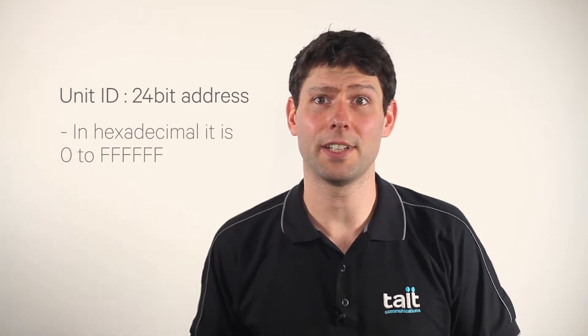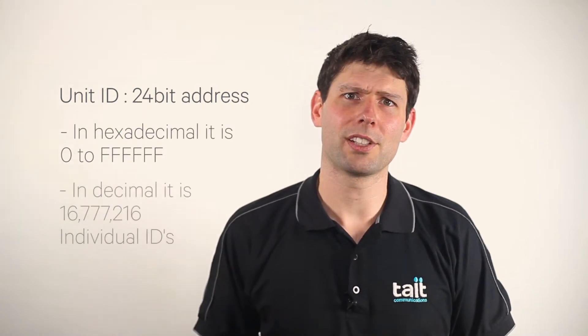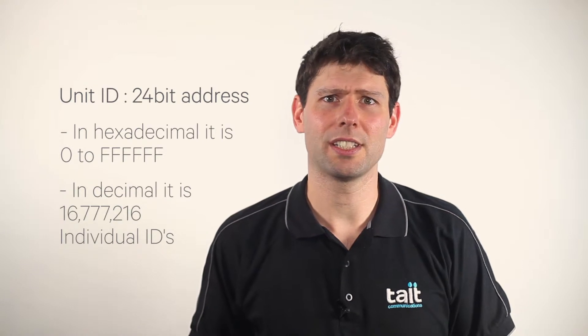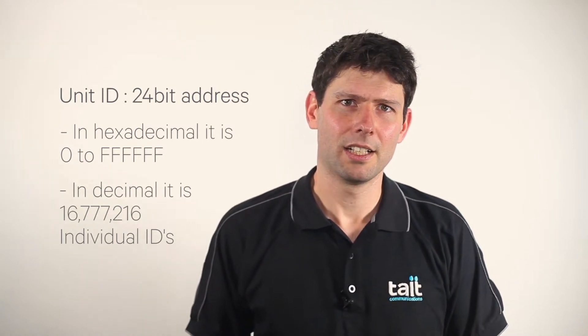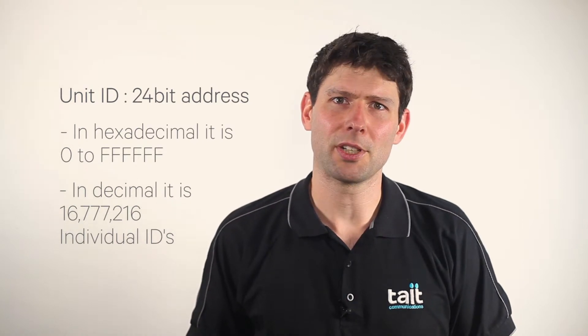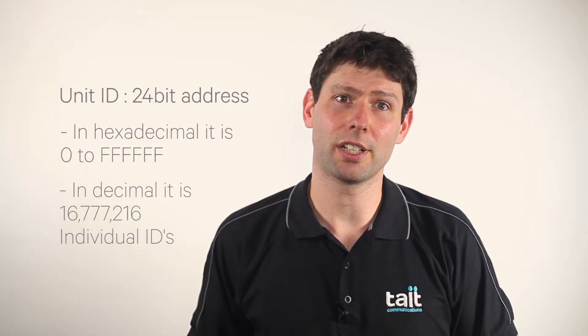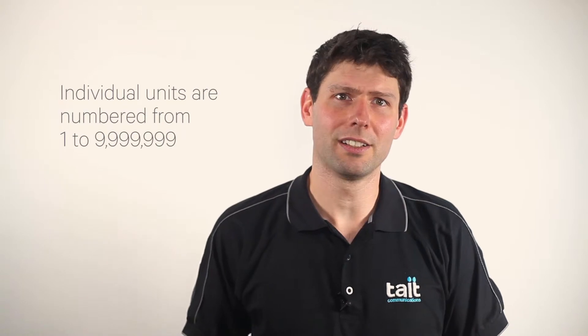Every subscriber unit in a P25 radio system has a unit ID. The unit ID is a 24-bit address. In hexadecimal, that is from 0 to FFFFFFF, or in decimal, that's 16,777,216 individual IDs. Some of these IDs are reserved for special functions such as identifying the trunk network, and typically individual radios are numbered in the range from unit 1 to unit 9,999,999.